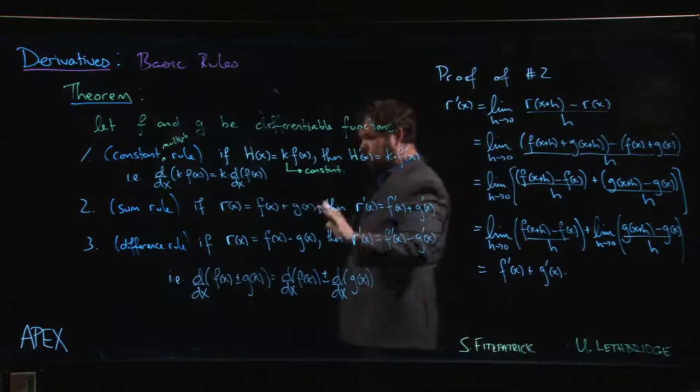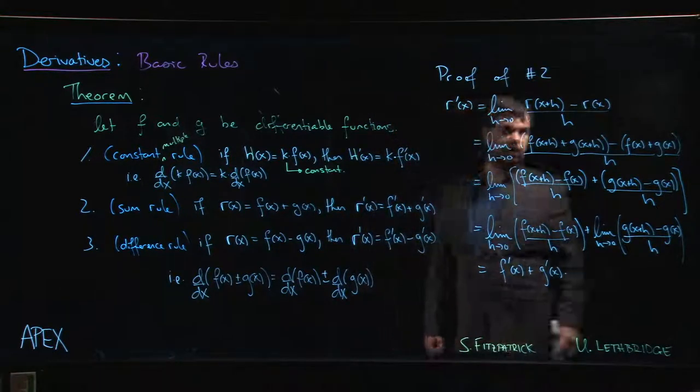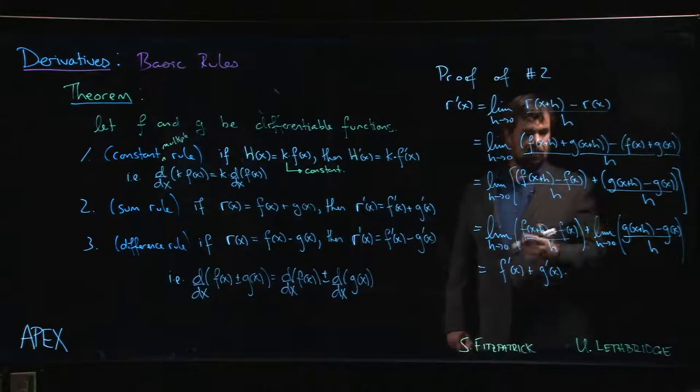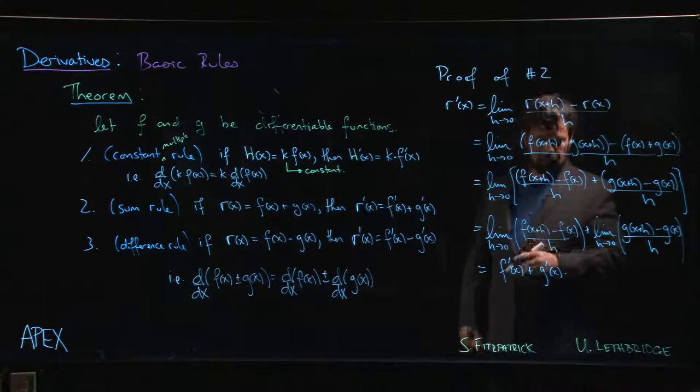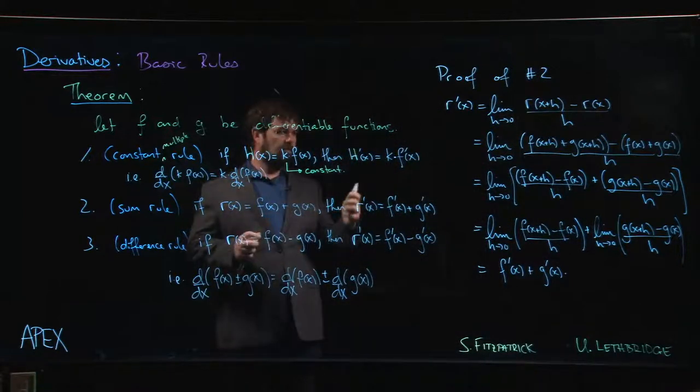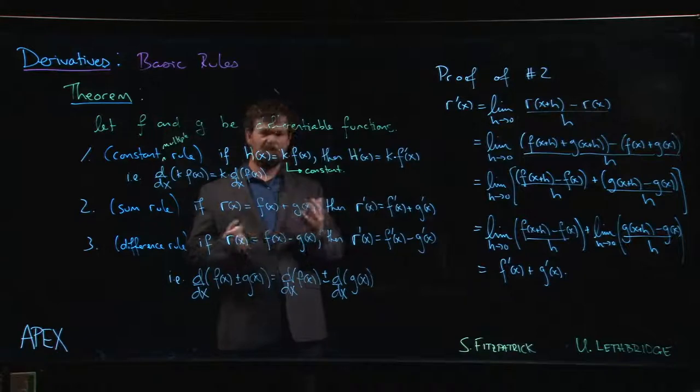So the sum rule works. The difference rule you do exactly the same; the only thing that's going to be different is those plus signs are going to be changed to minus signs. That's going to make that a minus sign, otherwise you get more or less the same result.